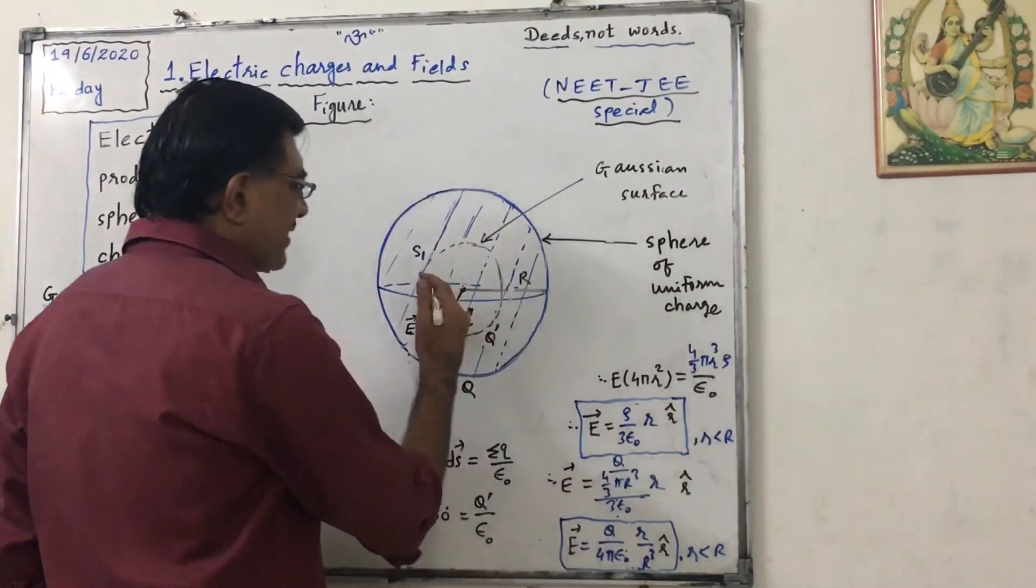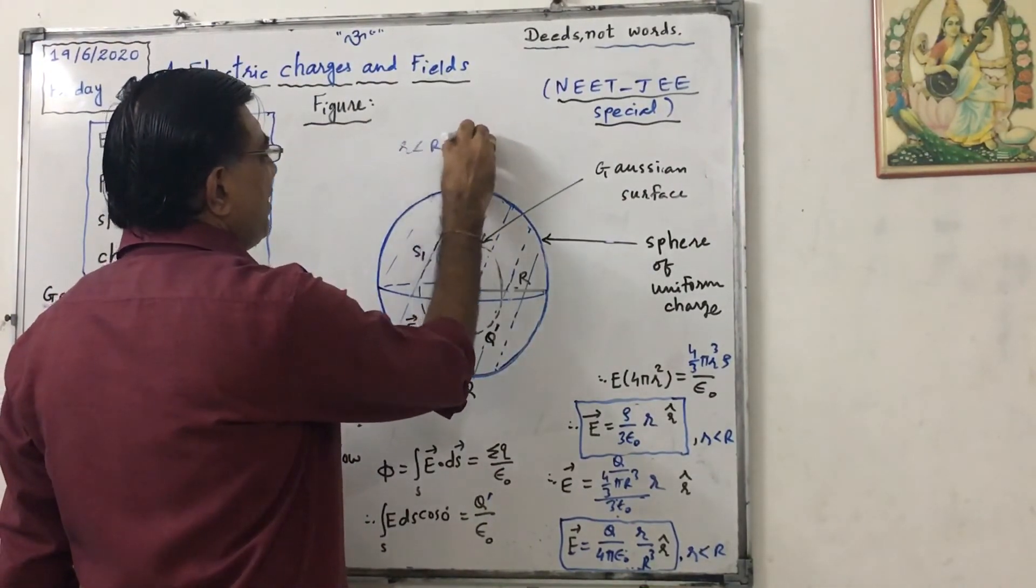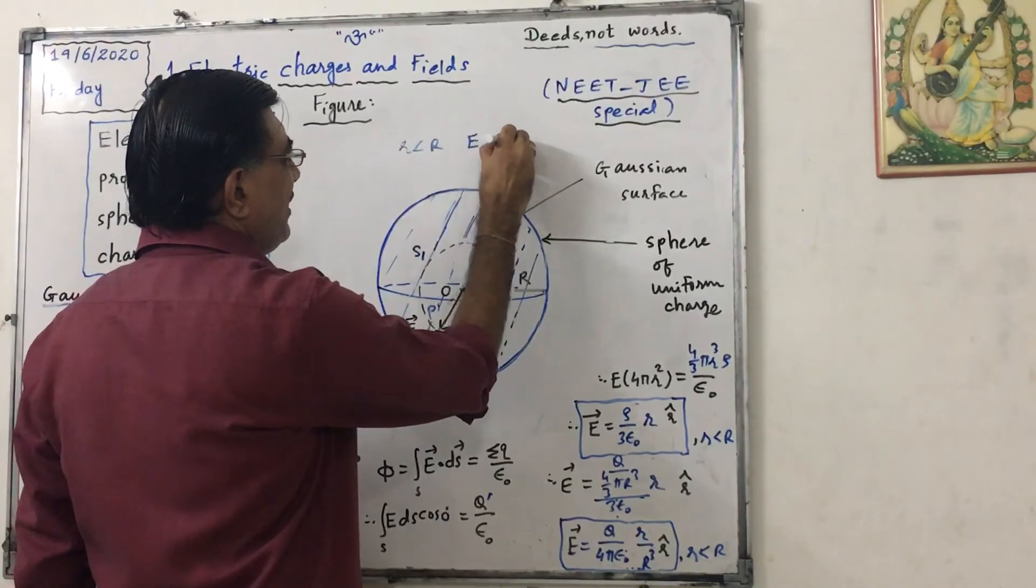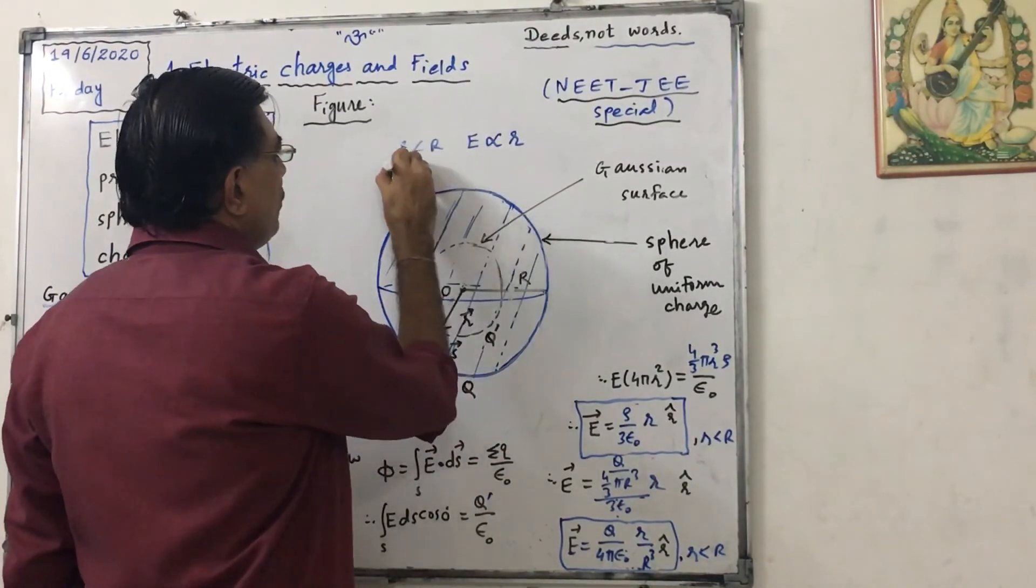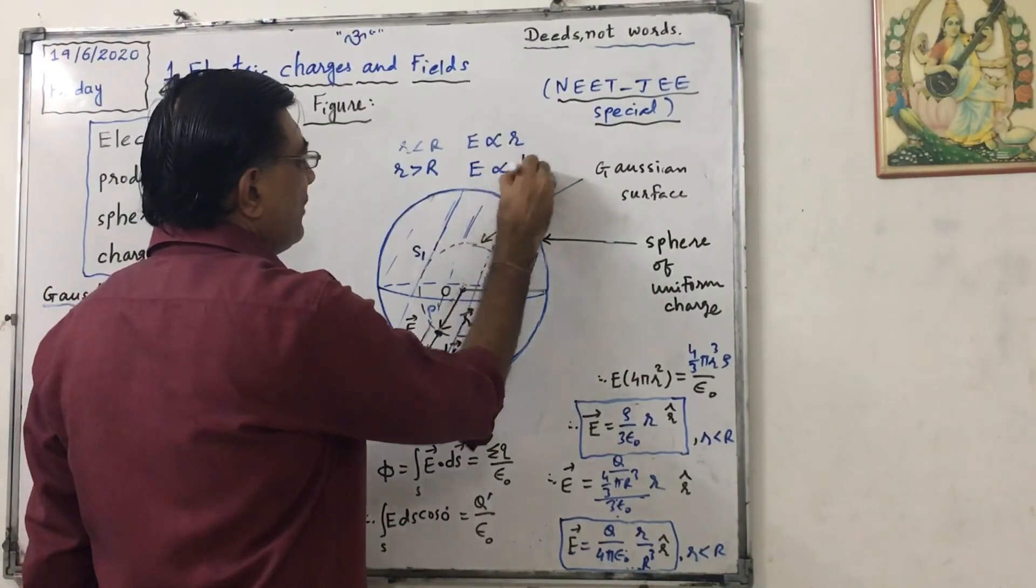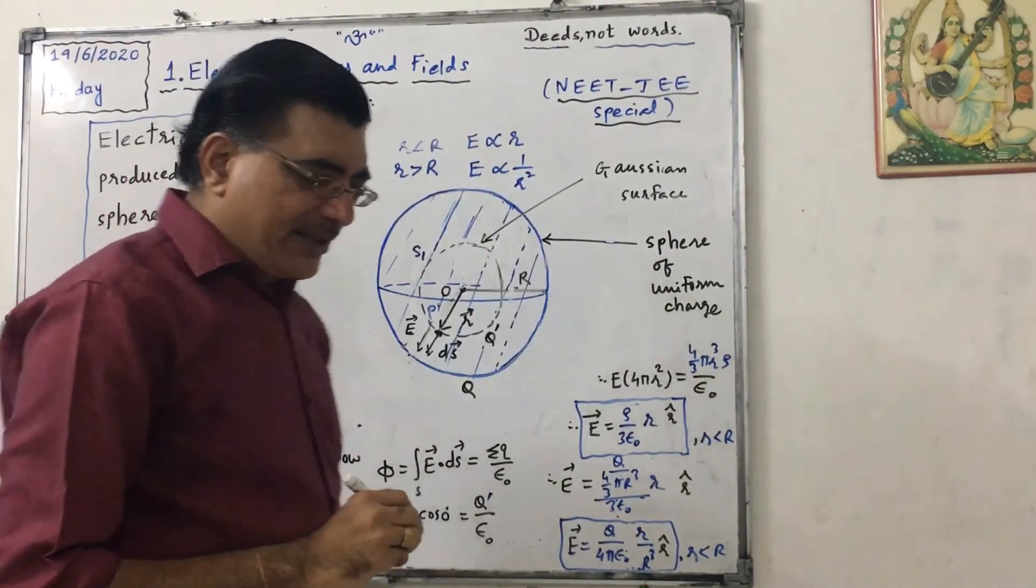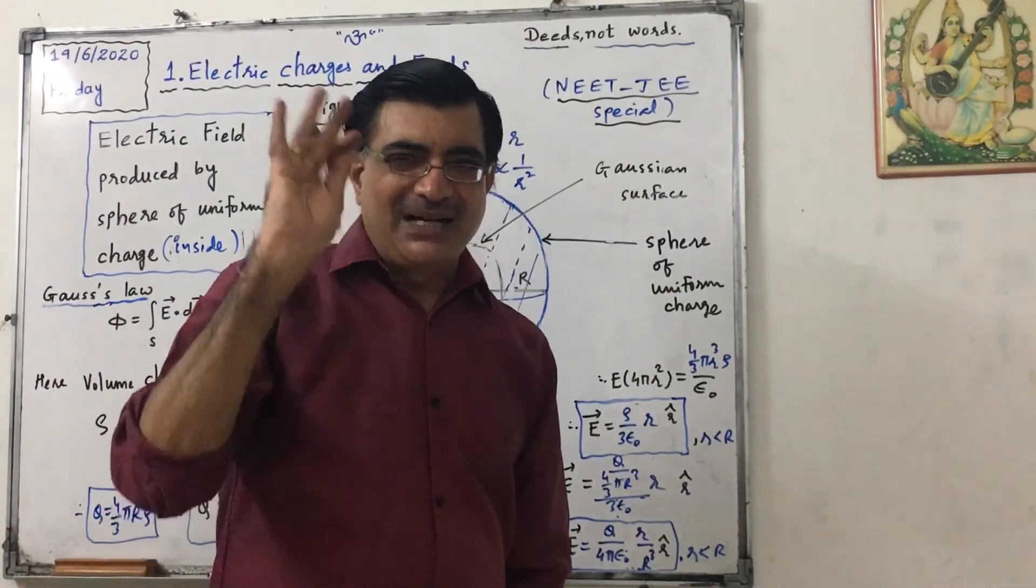In short, for point inside sphere, electric field is directly proportional to distance. For points outside sphere, E is proportional to 1 upon r square. We will prepare its graphs tomorrow, in next lecture. Bye.